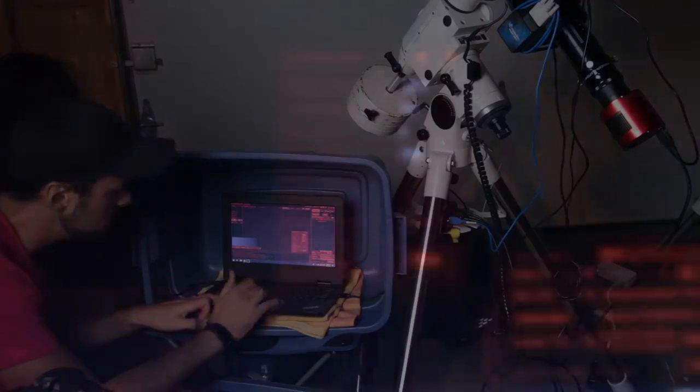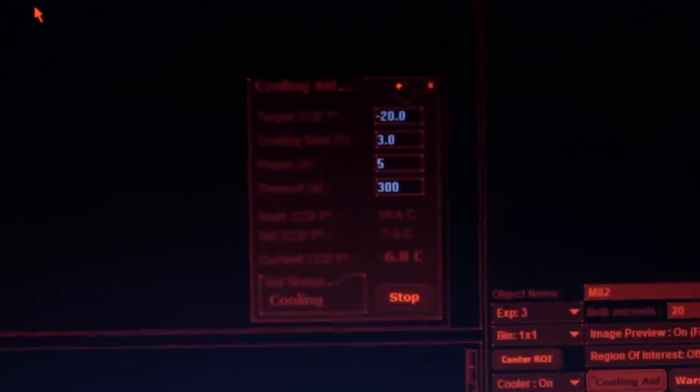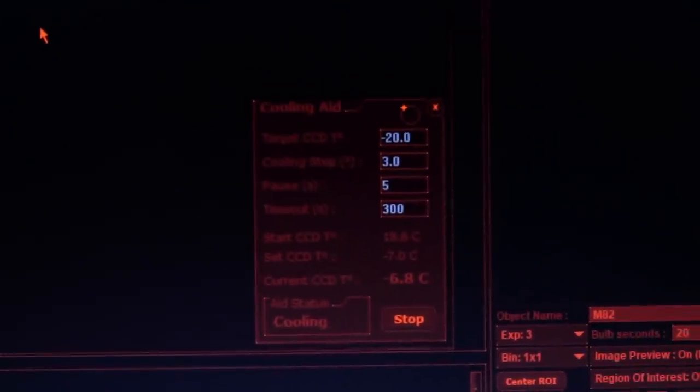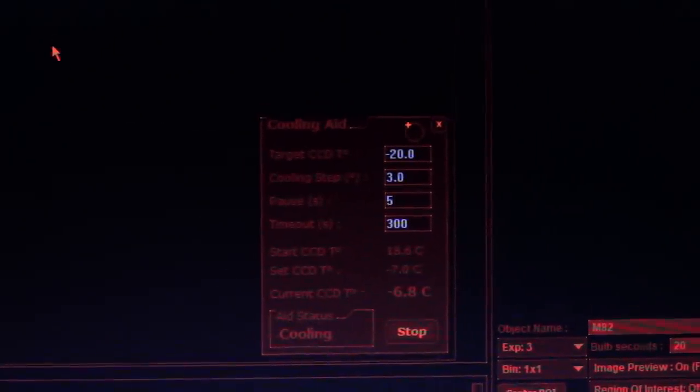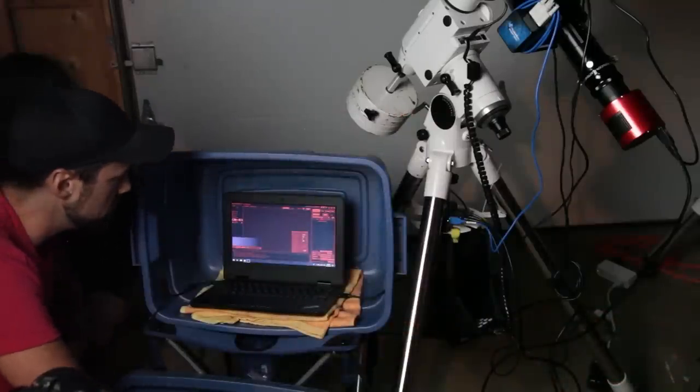So yeah, it's 22 degrees that sensor right now. And I'm going to set it to minus 20. Actually, I'm going to go to minus 25 because it's supposed to go down to 14 degrees tonight, which is the coldest it's been in probably about almost three months. Very hot summer here in Ontario.